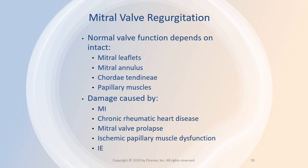Mitral valve function depends on intact mitral leaflets, mitral annulus, chordae tendineae, papillary muscles, left atrium, and left ventricle. Mitral regurgitation may result from problems with leaflets or from the surrounding structures. In primary, also called degenerative mitral regurgitation, a problem with the leaflets causes the regurgitation.